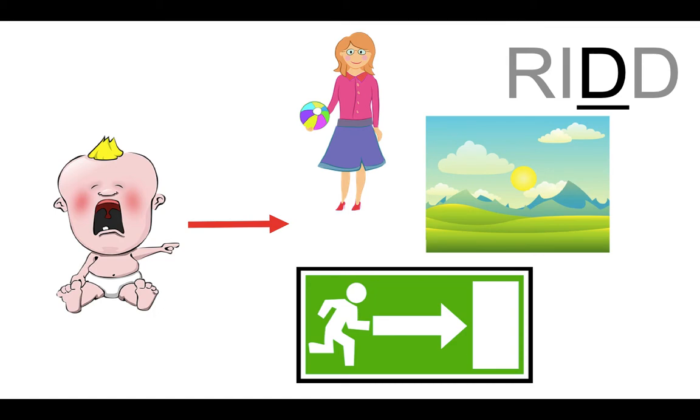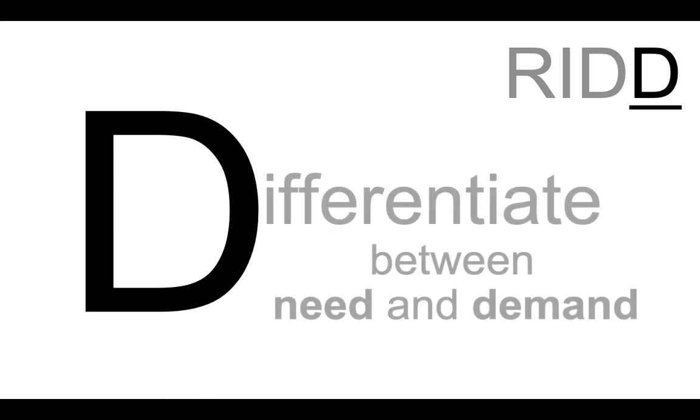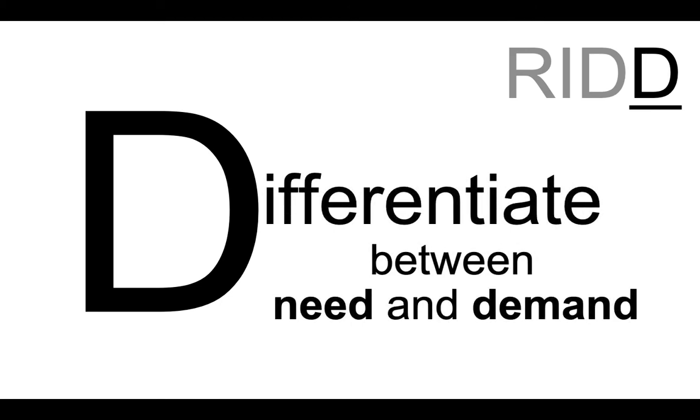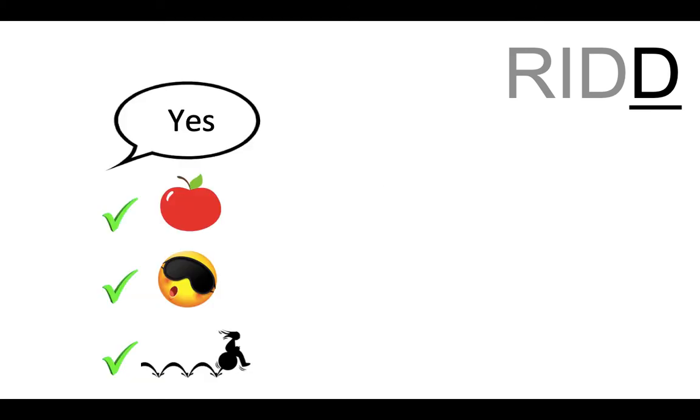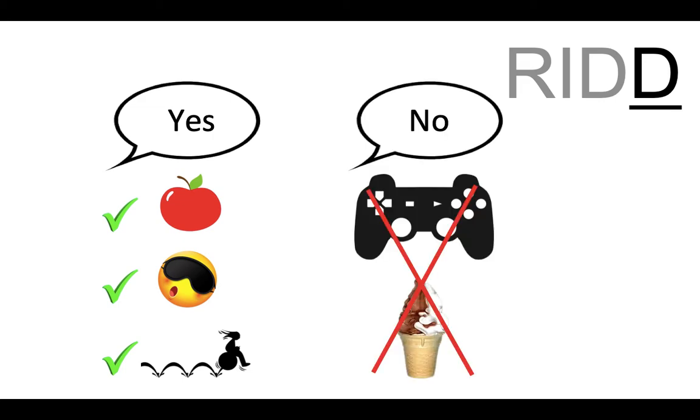And now to the second D and the last letter of this video. Differentiate between need and demand. Do say yes when meeting the child's physical and safety needs, but don't give into demands. Giving into demands may reinforce behaviors you don't want.